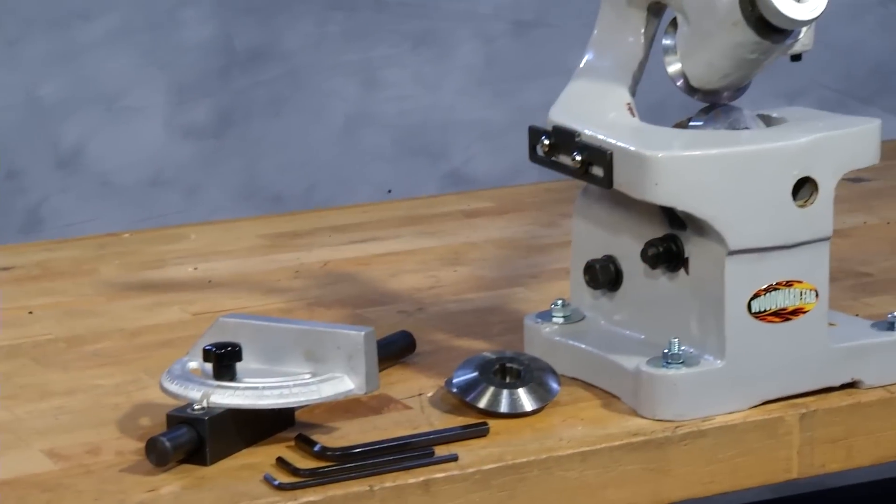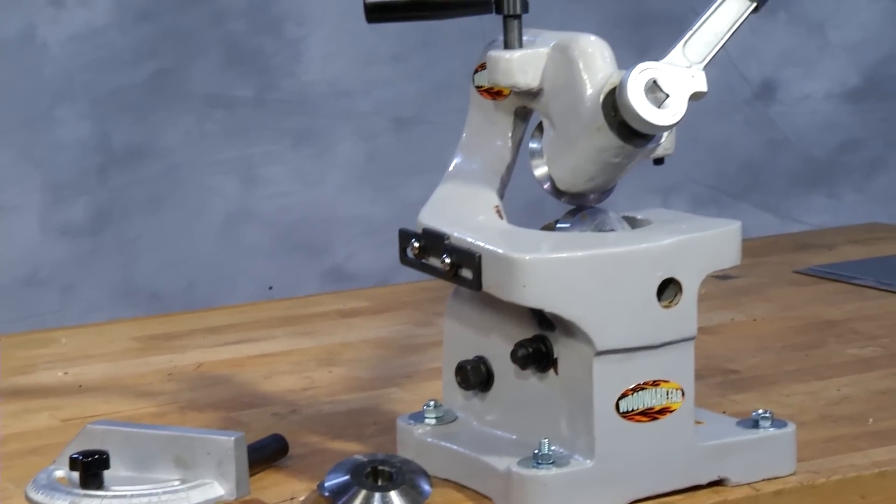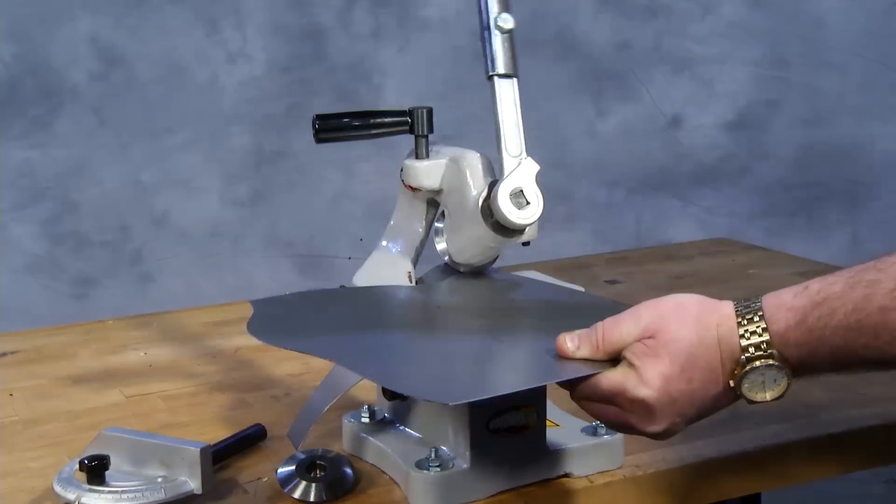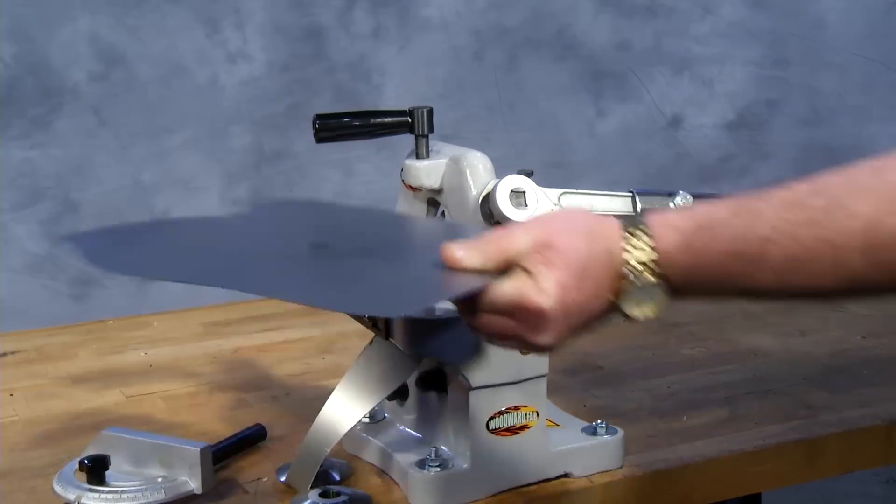The Woodward Fab Throatless Rotary Shear is a unique tool that gives you the ability to cut any contour on metals up to 1/8th of an inch.